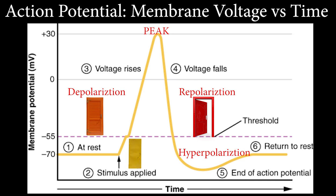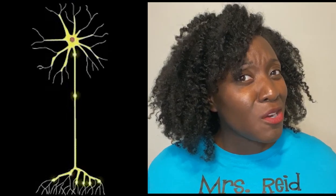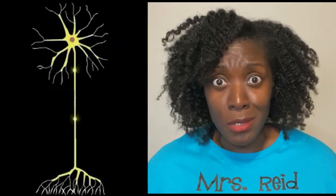Hyperpolarization means the membrane potential of the cell is more negative than it typically is — notice the dip on the action potential chart. This all happens in one millisecond, so it's extremely quick. Everything shown on the action potential chart is happening in one spot on the neuron. So how does the nerve impulse move from the cell body to the axon terminals?